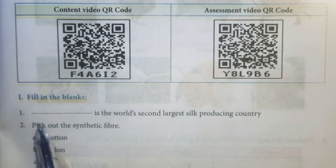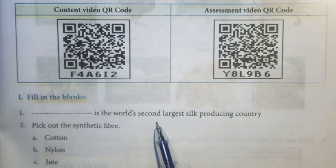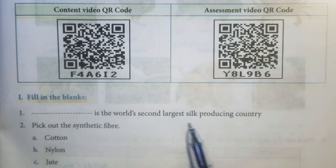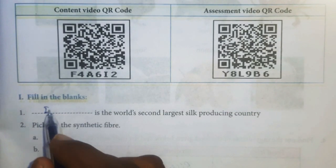First question: Blank is the world's second largest silk production country. Answer: India.